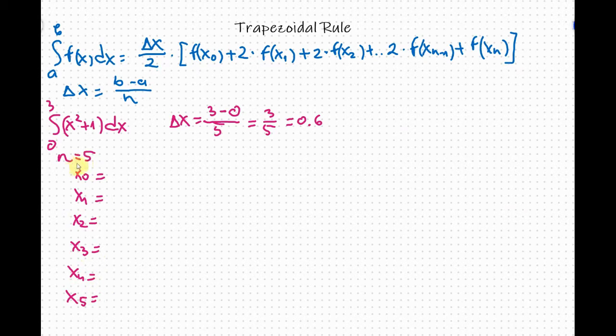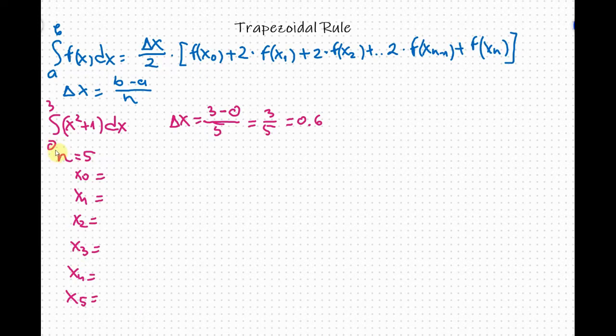Now what is x sub 0? x sub 0 will always be a. From our integral it is 0 and x sub 5 will always be b or in our case it is 3.